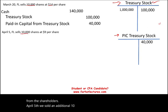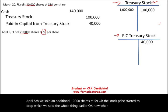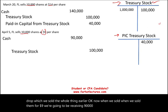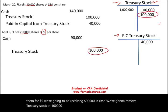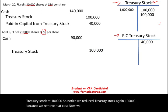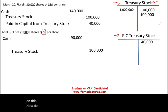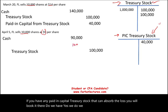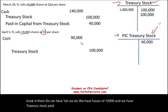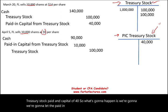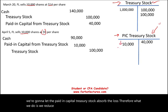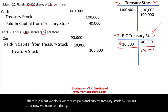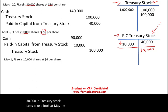On April 5th, we sold an additional 10,000 shares at $9 — the stock price has dropped. We received $90,000 in cash and remove treasury stock at cost — $100,000. We now have a $10,000 loss. The key: if you have any Paid-in Capital from Treasury Stock balance, use it to absorb the loss first. We have $40,000 available, so we debit Paid-in Capital Treasury Stock by $10,000, leaving $30,000 remaining.